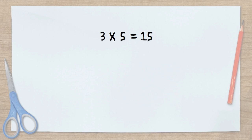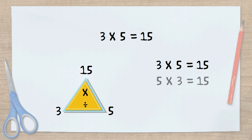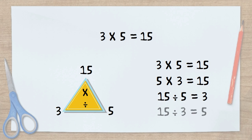A very important concept of multiplication and division is knowing the fact families. If we know that 3 times 5 equals 15, we know 3 other things: 5 times 3 also equals 15; 15 divided by 5 equals 3; and 15 divided by 3 equals 5.